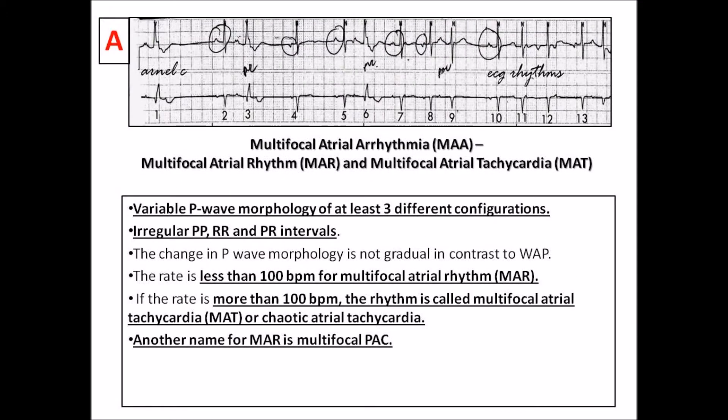Multifocal atrial arrhythmia is comprised of two arrhythmias, which could be multifocal atrial rhythm and multifocal atrial tachycardia, depending on the rates. On the surface EKG, it is recognized by variable P-wave morphology of at least three different configurations, irregular PP, RR, and PR intervals. The change in P-wave morphology is not gradual, in contrast to WAP or wandering atrial pacemaker.